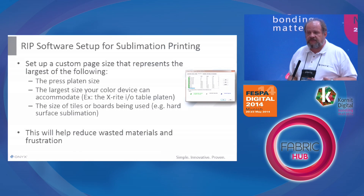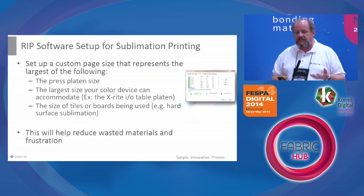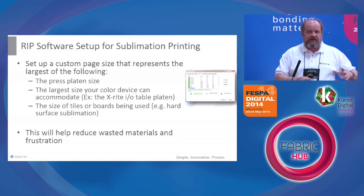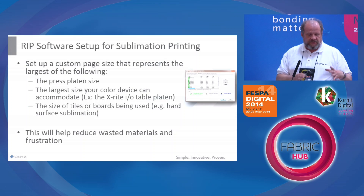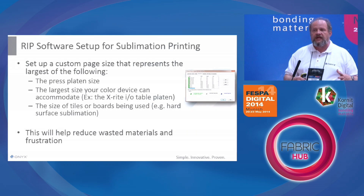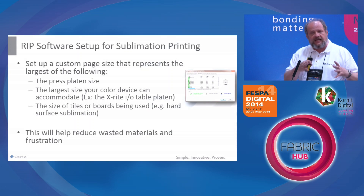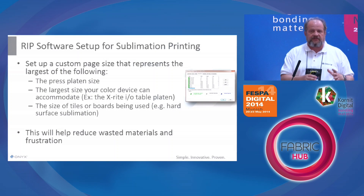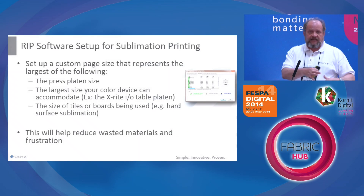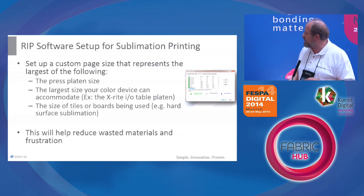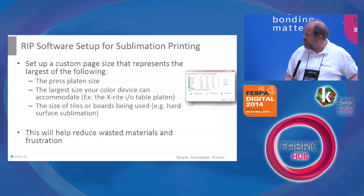It's a good idea to set up your system for the process. If you're doing sublimation printing — not necessarily even on textile, but ceramics or things like that — you may want to set up page sizes that are specific to what you're actually working with, so that swatches will be printed to the right size and images are printed to the right size. If you have a heat press with a specific size, you may need to worry about that as well. This can help reduce waste and a lot of frustration.